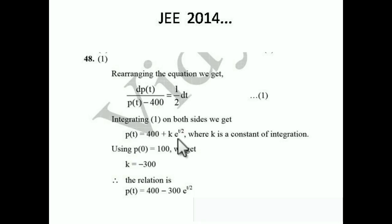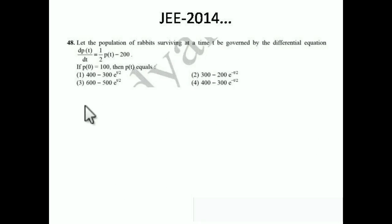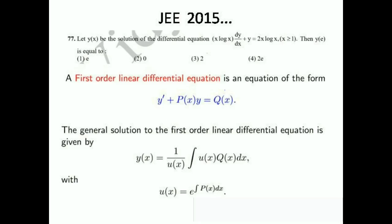Now use the condition p(0) = 100. Putting t = 0, e^0 = 1, so 100 = 400 + k, giving k = −300. Substituting k = −300, we get p(t) = 400 − 300·e^(t/2). So option number 1, which is 400 − 300e^(t/2), is the right answer. Very simple!